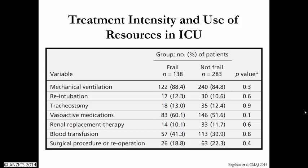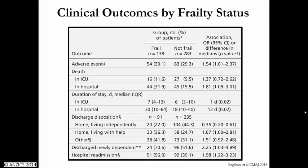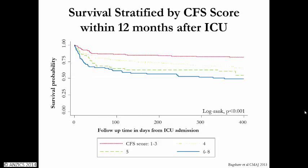When we look at outcomes, frail patients had more adverse events. Death in ICU was about the same between frail and not frail; however, where clear separation began was when patients left the intensive care unit. Mortality upon discharge from ICU was about two-fold higher — 32% versus 16%. Frail patients stayed longer in ICU and longer in hospital. Among those who survived to hospital discharge, far fewer frail patients were home and independent, many more were newly disabled, and they were more likely to be re-hospitalized within the subsequent 12 months.